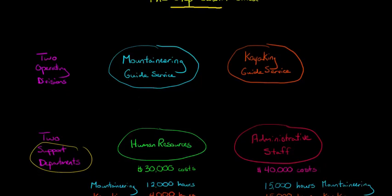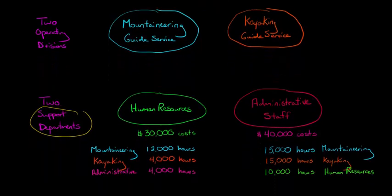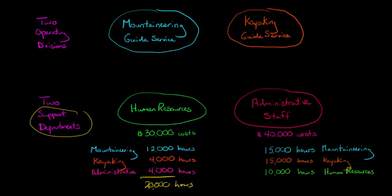Let's do an example. The HR department has a total of 20,000 hours worth of work. 12,000 of those hours have to do with the mountaineering department, 4,000 have to do with the kayaking department, and 4,000 have to do with the administrative staff support department.